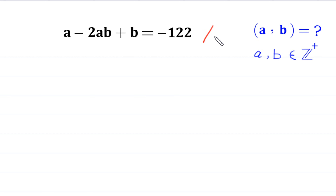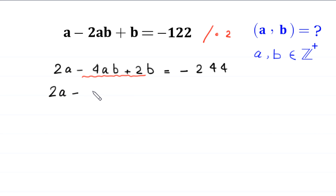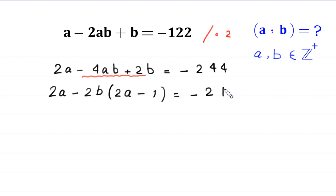First we multiply the whole equation by 2. This equation will become 2a minus 4ab plus 2b is equal to negative 244. From these two terms, negative 4ab plus 2b, we can factor out 2b. This will become 2a minus 2b, with common factor 2b, and bracket left 2a minus 1, is equal to negative 244.